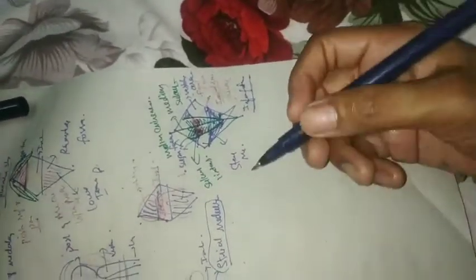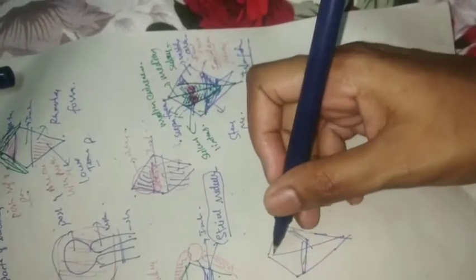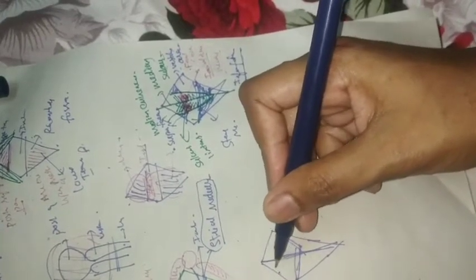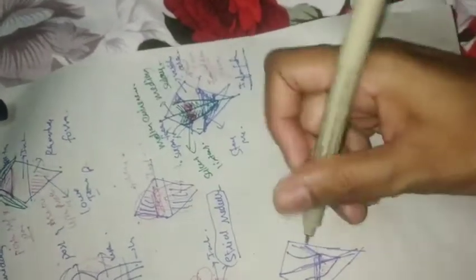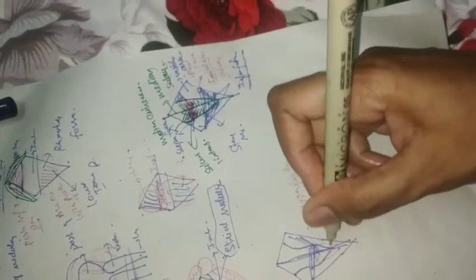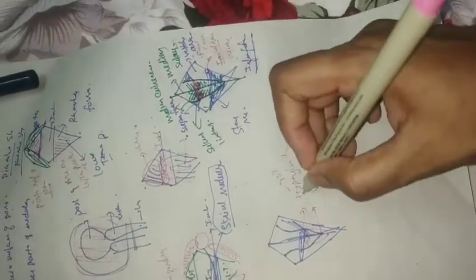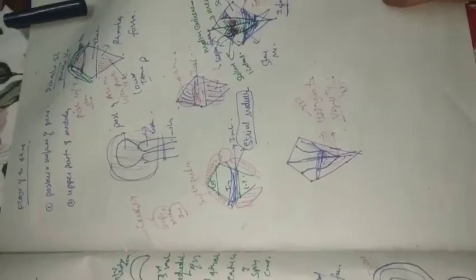Now let's see about the lower triangle. In the lower triangle below the stria medullaris, you have two triangles: the hypoglossal triangle and the vagal triangle. So the lower triangle has two areas — one is the hypoglossal triangle and the other is the vagal triangle. This is all about the floor of the fourth ventricle. Any doubts, please put in the comment box. Thank you for watching.